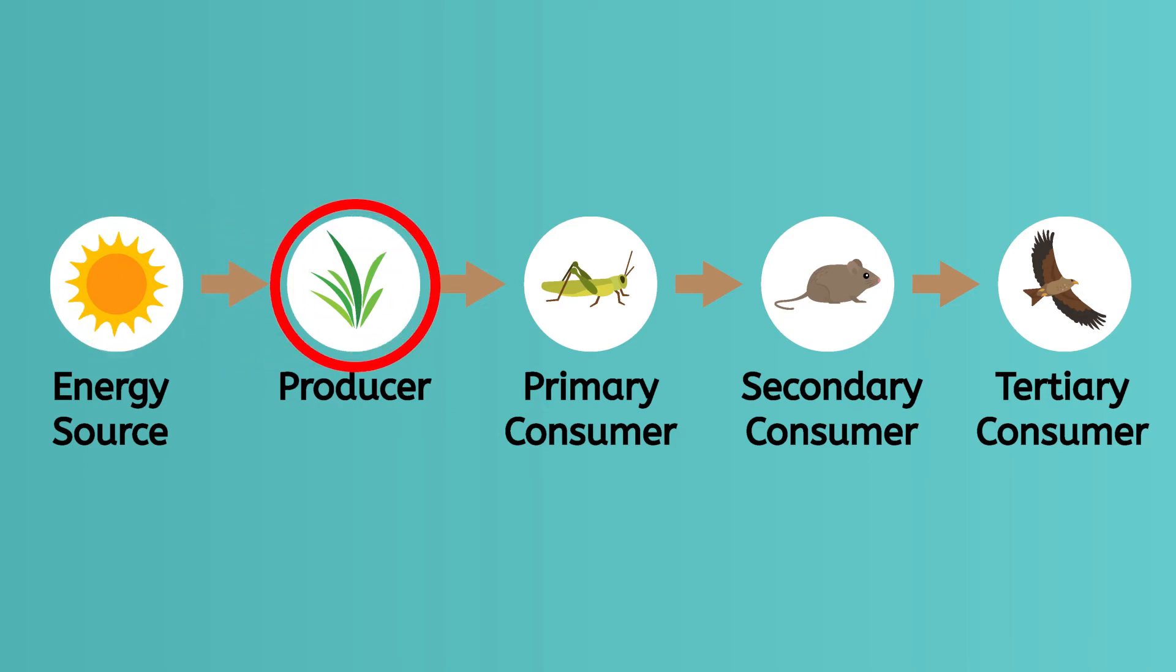As we move up the food chain, we have primary consumers, which eat producers. Secondary consumers, which eat primary consumers. And tertiary consumers, which can eat secondary and primary consumers. The arrows of a food chain show the direction of the flow of energy.